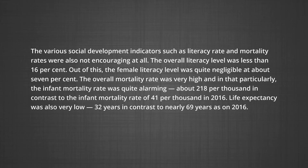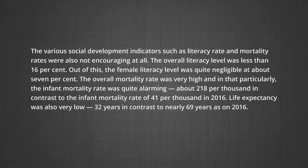Various social development indicators such as literacy rate and mortality rates were also not encouraging at all. The overall literacy level was less than 16 percent. Out of this, the female literacy level was quite negligible at about 7 percent. The overall mortality rate was very high, and particularly the infant mortality rate was quite alarming at about 218 per thousand, in contrast to 41 per thousand in 2016. Life expectancy was also very low at 32 years, in contrast to nearly 69 years in 2016.